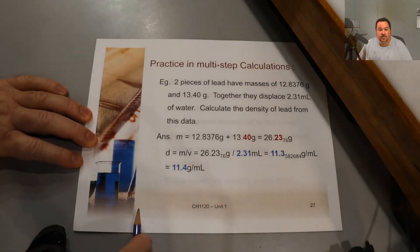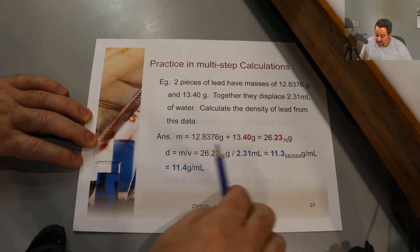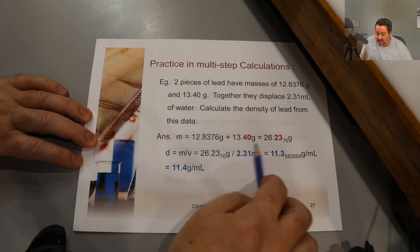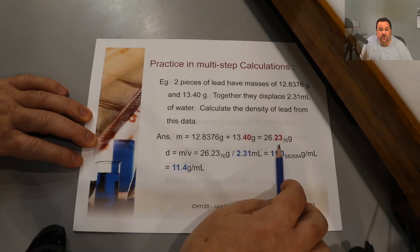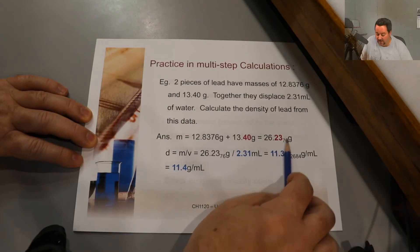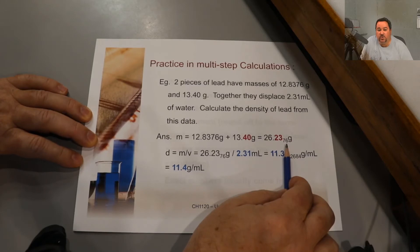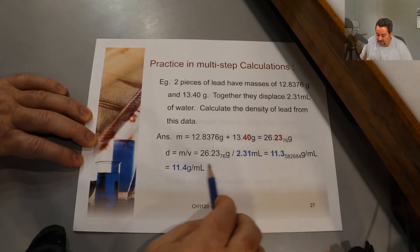Here's an example of a multi-step calculation. We have an addition operation here. The least number of decimal places was two. The answer is rounded to two decimal places, but we keep these digits in our calculator screen, or you can write them to one side however you wish to keep track of it. If it were a final answer, I would report 26.24 grams, but it's not a final answer, so I'm keeping these digits into the next step.